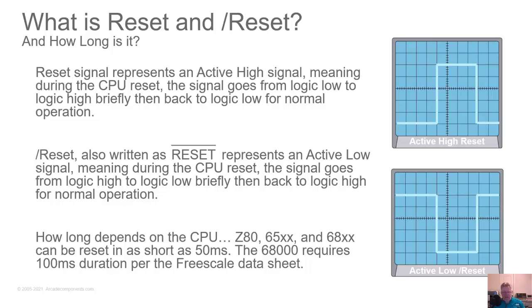Now slash-reset means it's an active low. Normally the reset line is going to be high — this is what the Z80 uses — so normally it's five volts. When you first turn it on, your logic probe will show a quick flash of low, then high. That's the power on reset working to get that CPU into its known state. How long depends on the CPU. For the Z80, 6502, 6809, etc., it can be as short as 50 milliseconds, but for the 68000 the Freescale data sheet says it should be 100 milliseconds in duration.